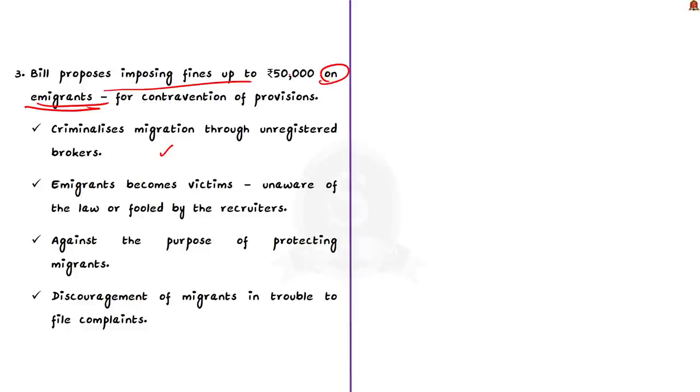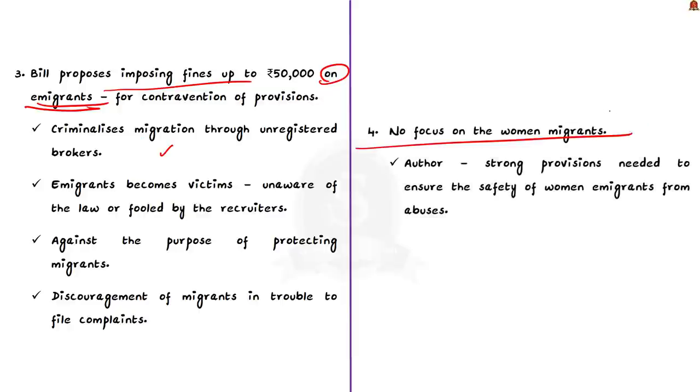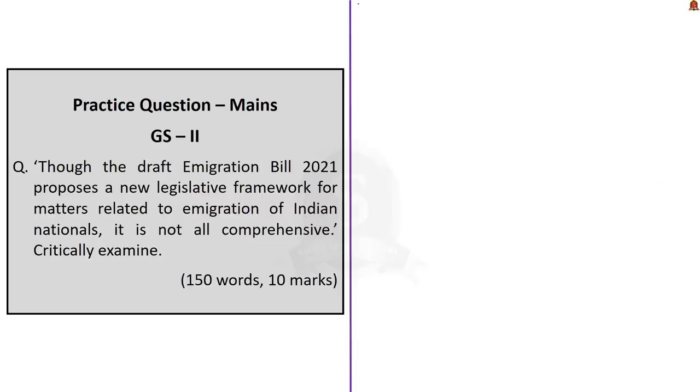Last but not the least, like any other law in our country this bill also does not focus on women migrants. If normally a male worker undergoes exploitation such as non-payment of wages, discrimination, retention of passports, then as a woman the migrants will have another extra problem which is abuse. This abuse could be sexual abuse or physical abuse. Author urges that the bill should include strong provision to ensure safety of women migrants. These are some of the contentious provisions in the draft immigration bill of 2021.